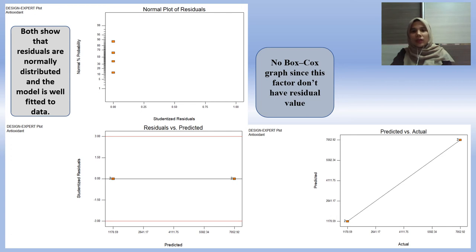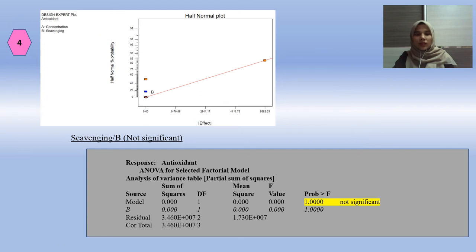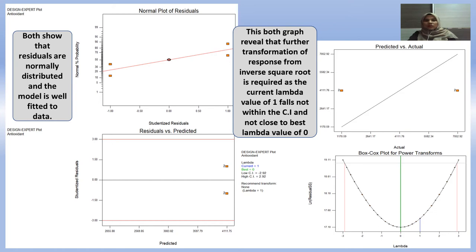The graphs produced show that the first and second graphs indicate residuals are normally distributed and the model is well fitted to the data. For the fourth graph (box-cox plot), it did not appear because there are no residual values from this factor. The second factor is curve banking (OB), which is not significant as its value exceeds 0.5. The first and second graphs show residuals are normally distributed and the model is well fitted. The third and fourth graphs reveal that further transformation from inverse square root is required, as the current lambda value of 1 falls within the confidence interval and crosses the base lambda value of 0.